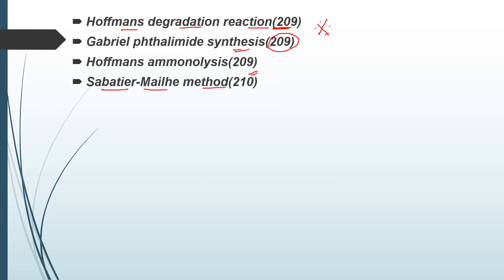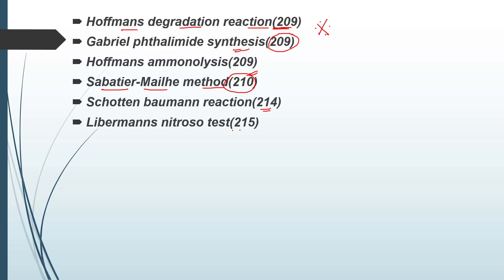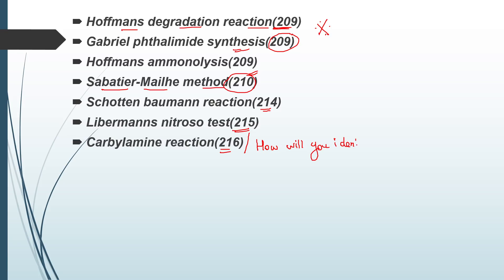Sabatier-Senderens method, page 210. Scott and Hofmann reaction, page 214. Liebermann's nitroso test, page 215. Carbylamine reaction, page 216 — used to identify primary amines, explain the carbylamine reaction. Mustard oil reaction — very very important.